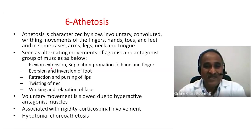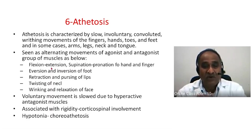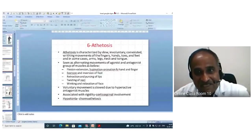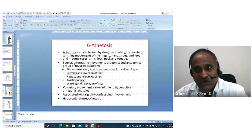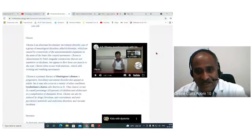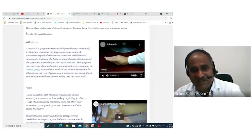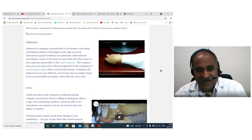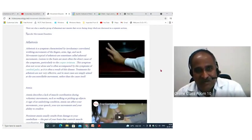The voluntary movement is slow due to hyperactive antagonistic muscle groups, associated with rigidity and corticospinal involvement. Hypotonia is also seen in athetosis. Here are athetotic movements — you can see how the fingers are making slow athetotic movements, including motion of the facial features.